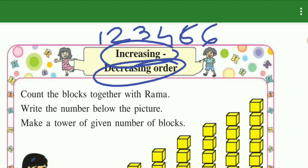And decreasing means larger numbers first: 6, 5, 4, 3. This is decreasing order.